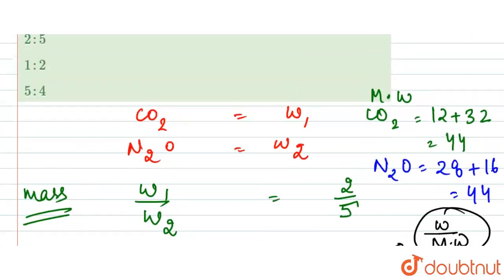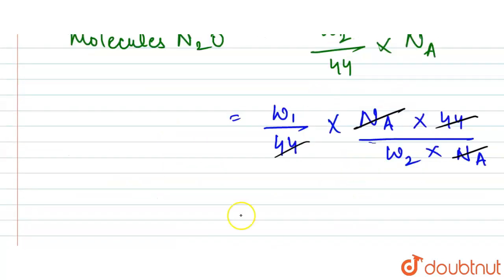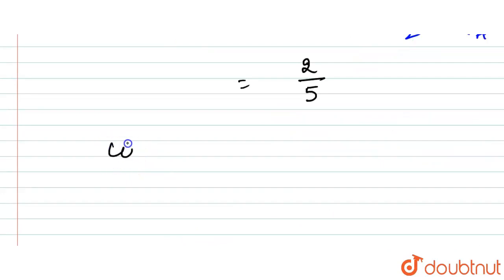So here what we have is that w1/w2 is 2/5, so we will put that value. So here it is 2/5.